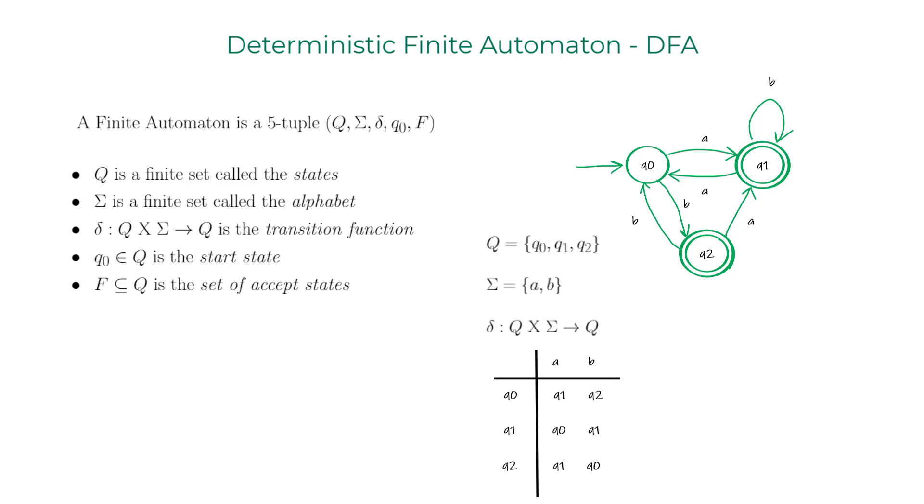Now I'm gonna evaluate the domain of the transition function which is Q cross Sigma. So Q cross Sigma is these six tuples that I have there. Now I'll use these tuples as input arguments for the transition function. Delta of Q0 comma A maps to Q1. Delta of Q0 comma B maps to Q2.